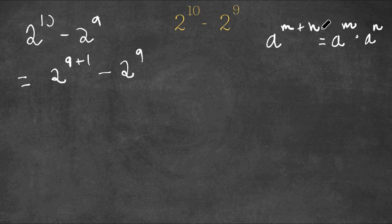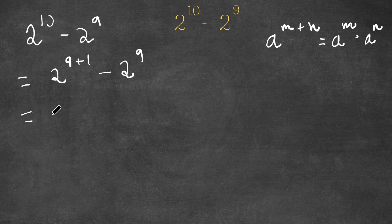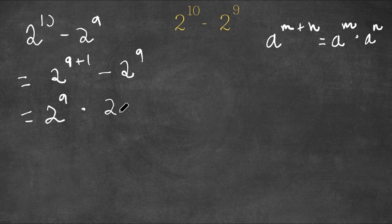I'm going to use this property for 2 to the power of 9 plus 1. We can think of 2 as a, 9 as m, and 1 as n. So this equals 2 to the power of 9 times 2 to the power of 1, and now we are subtracting this with 2 to the power of 9.